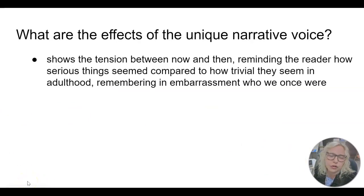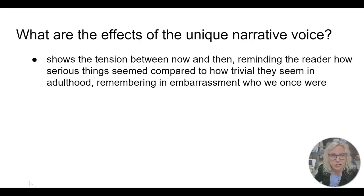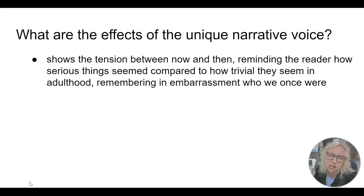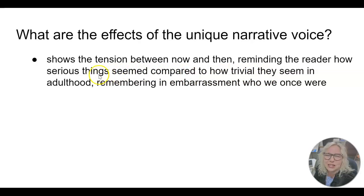What are some of the effects of this foreshadowing? I think it does show the tension between now and then — 'then' being the 1985 15-year-old Benji, and 'now' being the writer looking back on his life. Of course it is still fiction; it's not exactly Colson Whitehead as the writer, even though we know this is loosely based on his life since he's called it an autobiographical novel. But it reminds us how serious things seemed compared to how trivial they seem now.